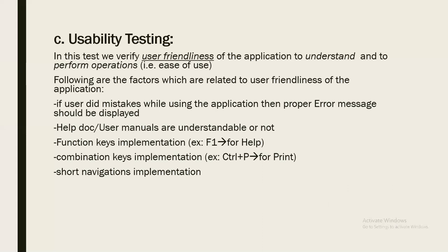Then short navigation implementation — meaning major functionality in the application should be accessible within one or two clicks. For example, if registration is the main functionality, we should be able to get the registration form in one or two clicks. Also, tab implementation and whether tool tips are provided or not — these types of factors come under usability test factors.